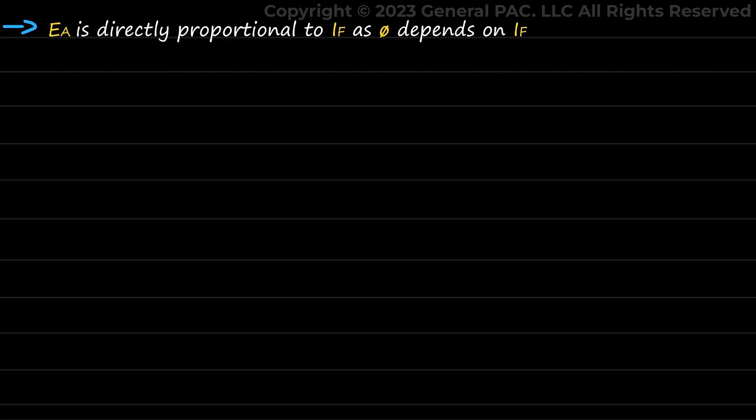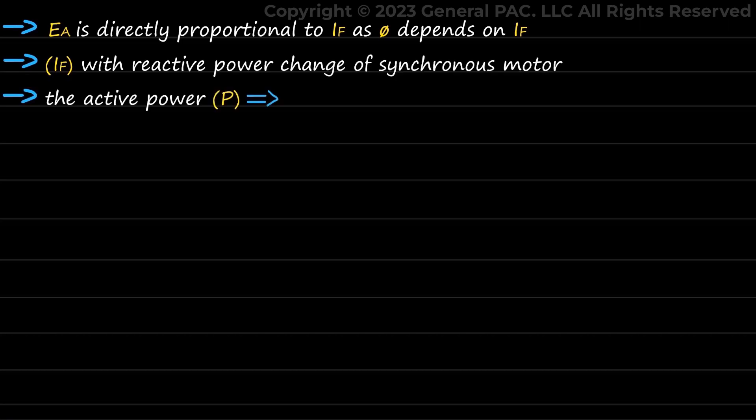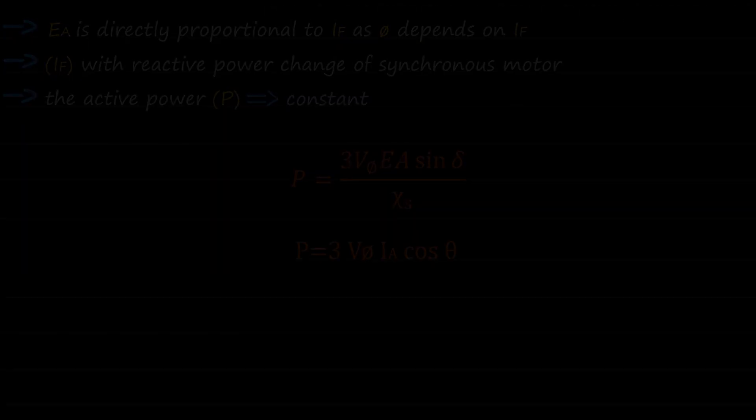So now, to understand the effect of field current IF with reactive power change of synchronous motor, the active power P will be kept constant, which is given as P equals 3 times V phi times Ea times sine of delta over Xs, and P equals 3 times V phi times Ia times cos of beta.